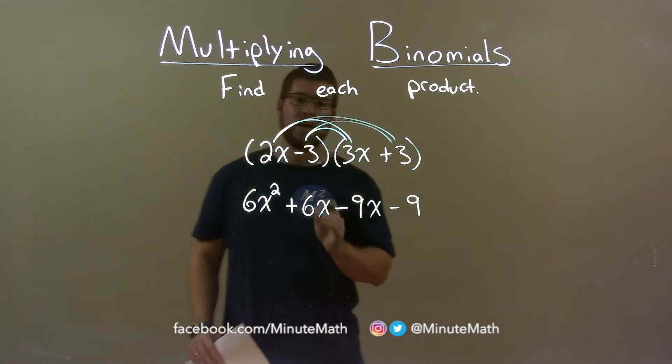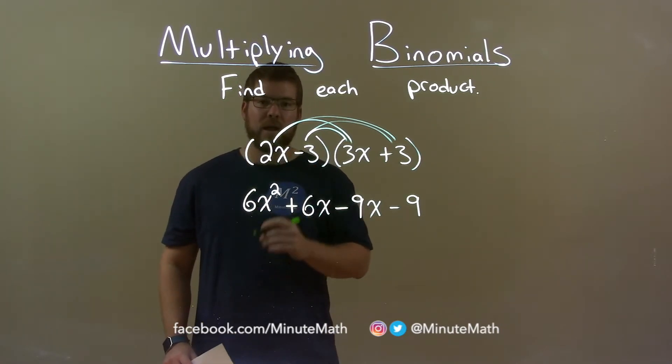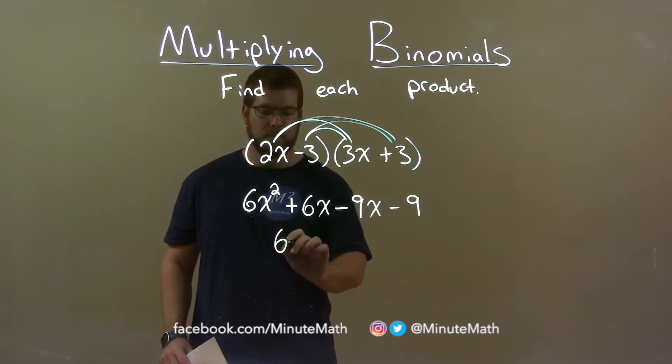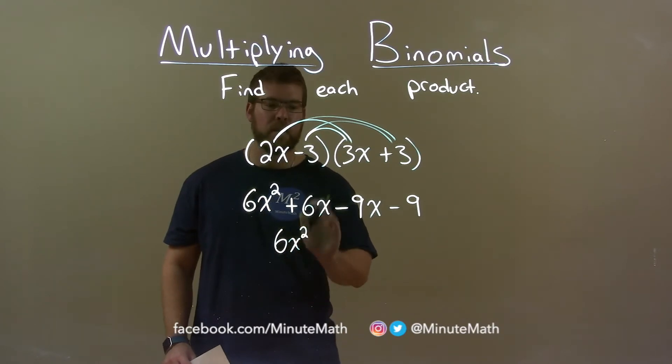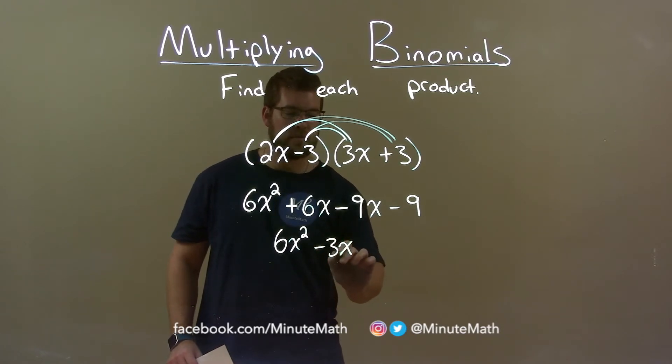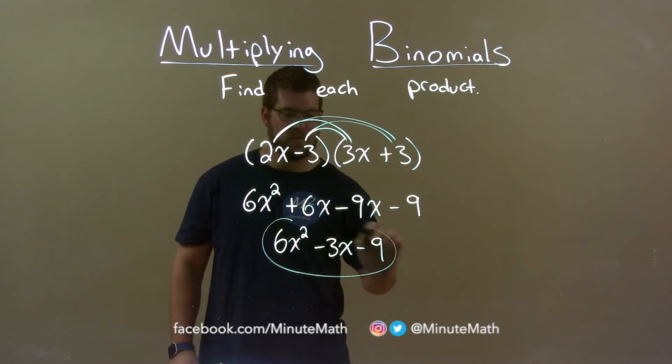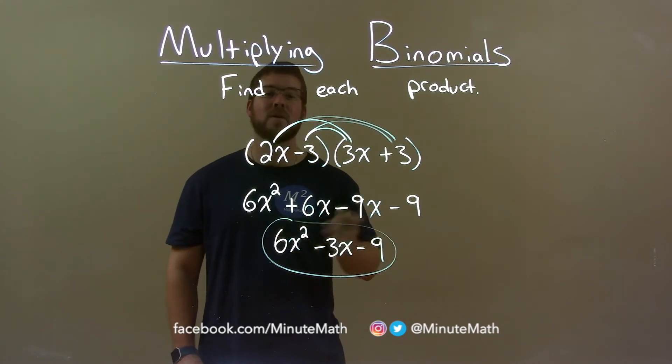We now want to combine our like terms to get our final answer. 6x squared has no other like terms, so it's 6x squared. 6x minus 9x is minus 3x. Bring down the minus 9. And our final answer is 6x squared minus 3x minus 9.